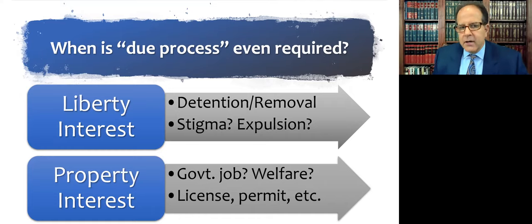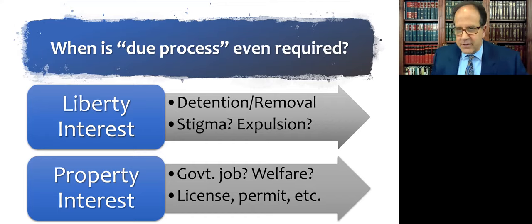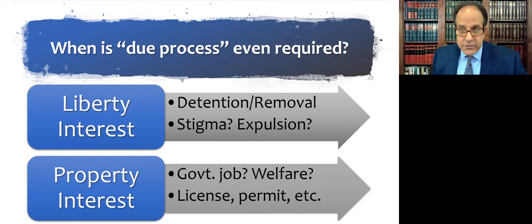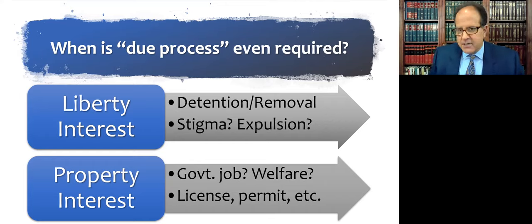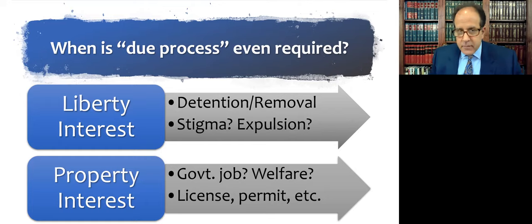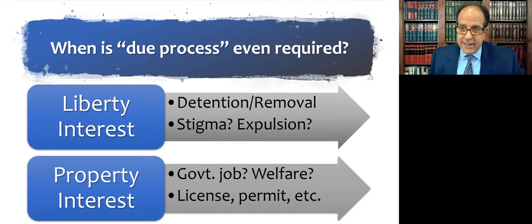Cases where we're restraining your freedom of movement — that's pretty easy to see the liberty interest. Less intuitively obvious are the stigma cases. The sex offender registry: if you discover your name and picture and address are on the sex offender registry and you've never been convicted, you have to have some way to get your name off that list. The same could be true for no-fly lists or other government watch lists that make you ineligible for certain activities like getting on an airplane. Even less intuitive is expulsion from schools — if we decide you've misbehaved and we're going to kick you out, we have to give you a hearing because you have a liberty interest in being in school.